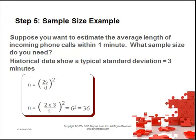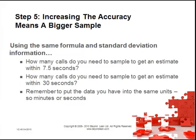Suppose you want to estimate the average length of incoming phone calls within 1 minute. Historical data shows a typical standard deviation of 3 minutes. Using the sample size formula, your sample size would be 36. Increasing the accuracy means a bigger sample. Using the same formula, calculate how many calls you need to sample to get an estimate within 7.5 seconds, and within 30 seconds. Remember to put the data into the same units — either minutes or seconds. Pause the video and do those calculations.